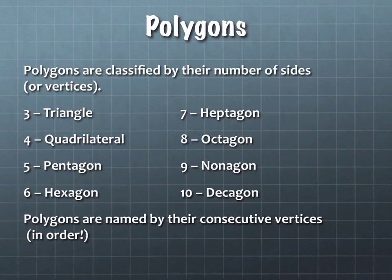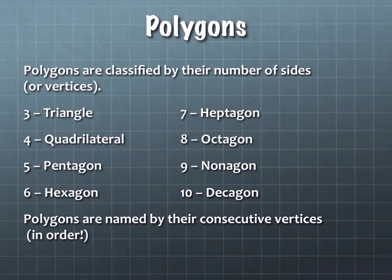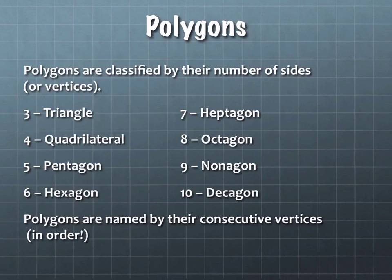Polygons are classified by their number of sides. Three sides is a triangle; four sides is a quadrilateral; five sides is a pentagon; six sides is a hexagon. Seven is a heptagon — we don't see these drawn very often. Eight is an octagon, familiar from stop signs. Nine is a nonagon. Ten is a decagon. Our least commonly remembered ones are probably seven and nine: heptagons and nonagons.